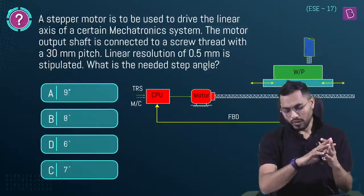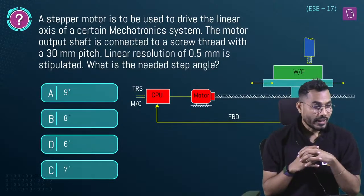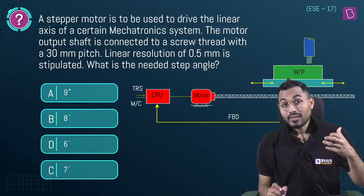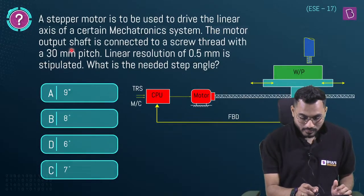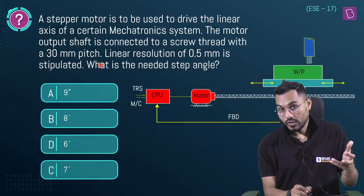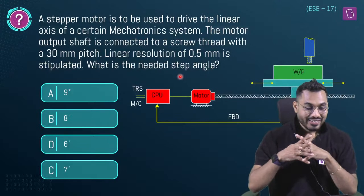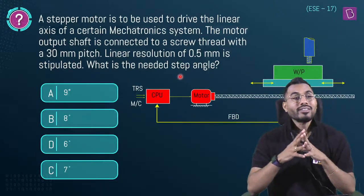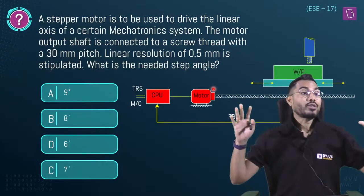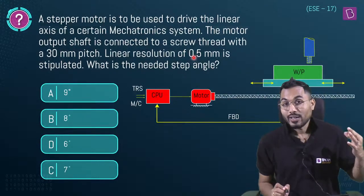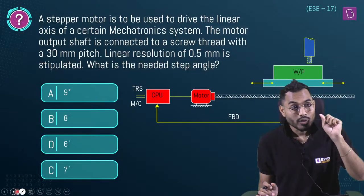ESC 2017 question: a stepper motor drives the linear axis of a mechatronic system. The motor output shaft is connected to a screw with pitch 30 mm. A linear resolution (BLU) of 0.5 mm is stipulated. What is the required step angle of the stepper motor?